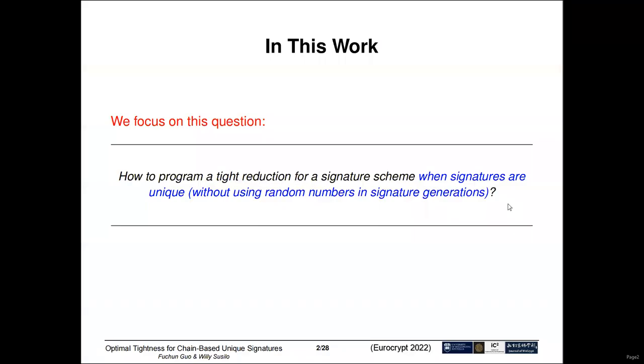In this work, we focus on this question: how to program a tighter reduction for a signature scheme when signatures are unique, meaning without using random numbers in signature generation.